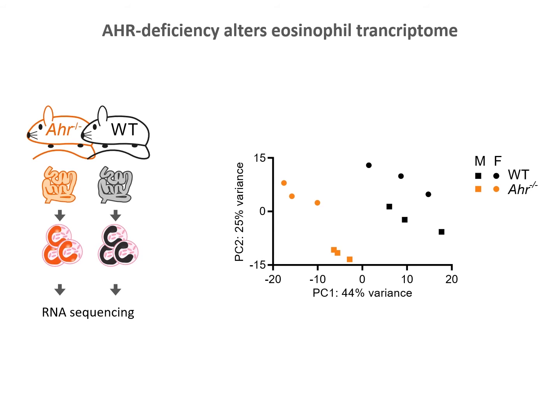AhR can regulate the expression of hundreds of genes beyond the classical pathway. We therefore compared the transcriptomes of intestinal eosinophils from wild-type and AhR knockout mice. Samples segregated by genotype in principal component analysis and over a thousand genes were differentially expressed.